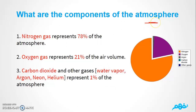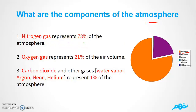What are the components of the atmosphere? Looking at the chart, we can notice that the majority of the gases take the orange color — that's nitrogen gas. Nitrogen gas represents 78% of the air volume.